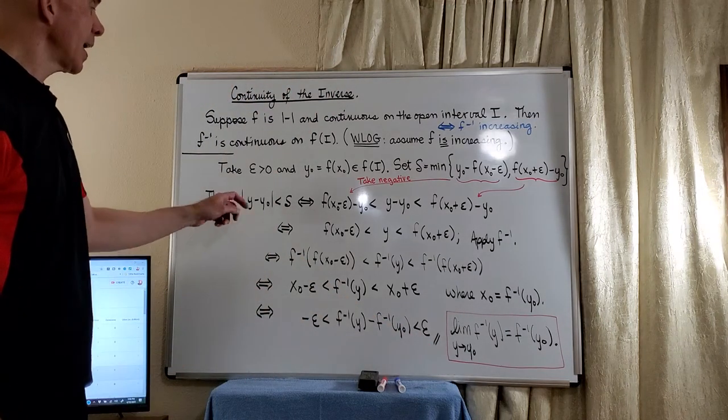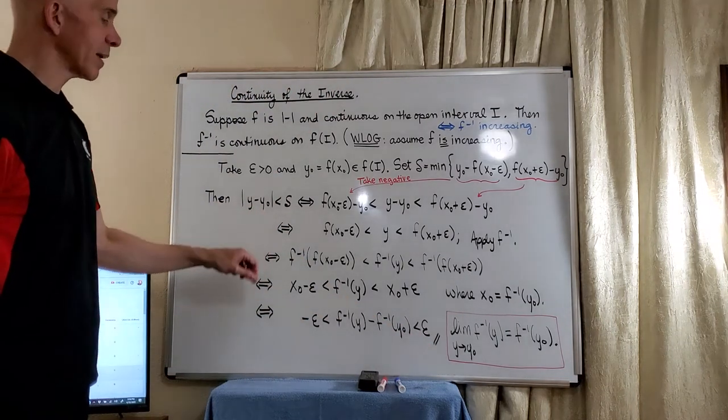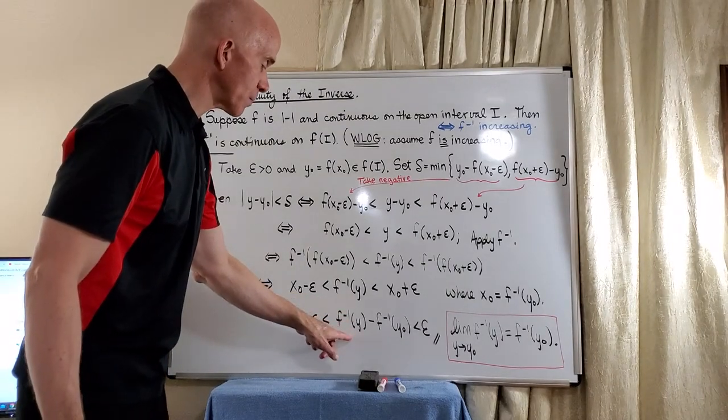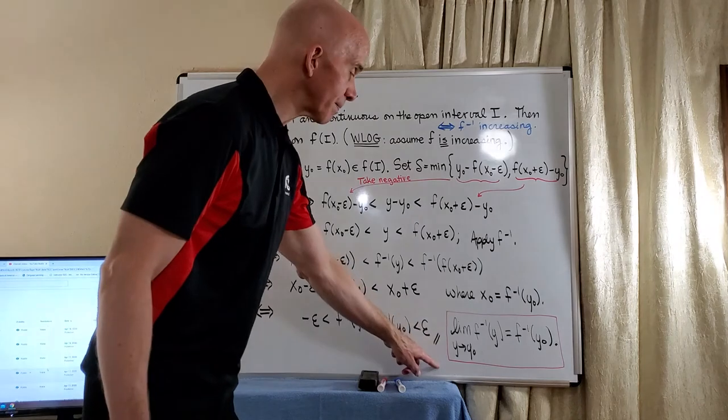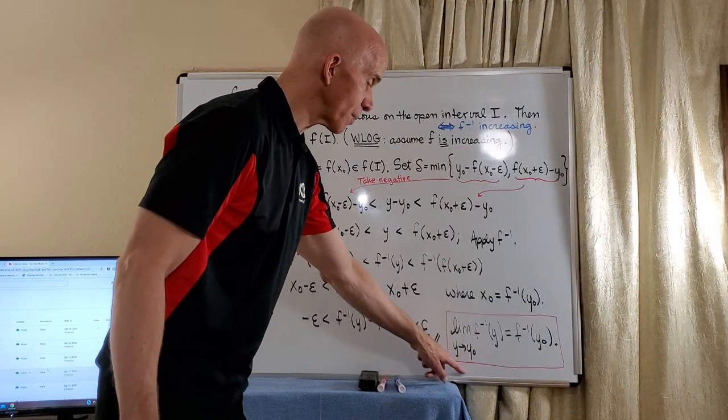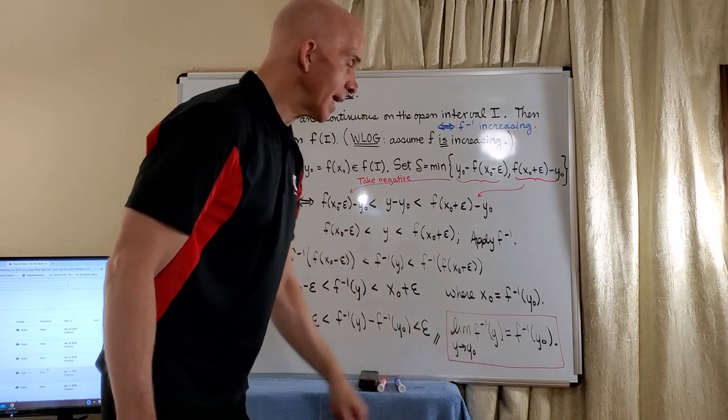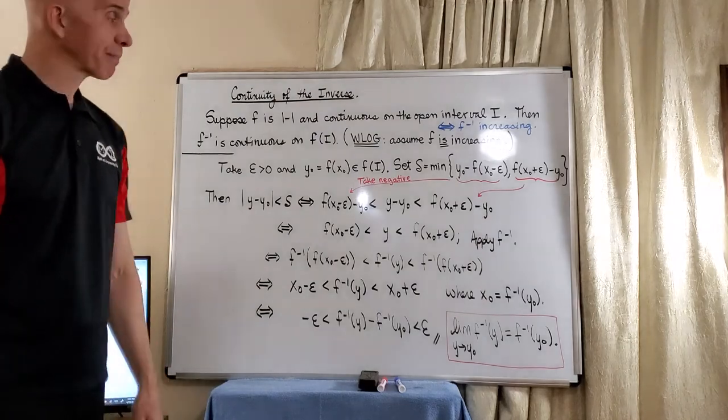So basically, if we can get y close to y-naught, we can get f inverse of y close to f inverse of y-naught. That is, the limit of f inverse of y as y approaches y-naught is indeed f inverse of y-naught. And we are done.